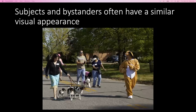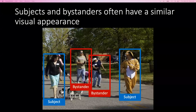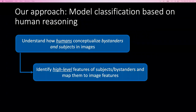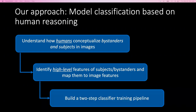To do this classification automatically, we don't have this rich source of inferential knowledge. Our approach was to first understand how humans conceptualize subjects and bystanders, identify high-level features — what factors they use to make these decisions — and then map these high-level features into low-level image features, and then build a classifier.